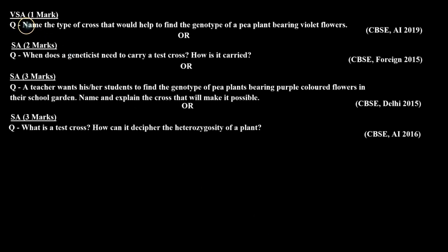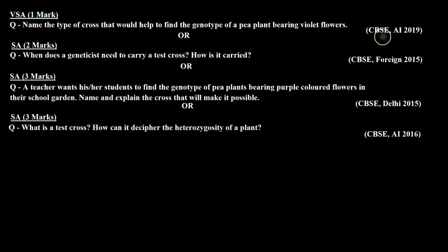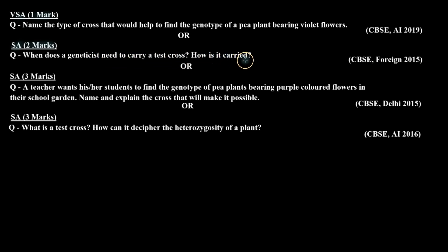The first type was asked as a very short answer type question for one mark: 'Name the type of cross that would help to find the genotype of a pea plant bearing violet flowers.' It was asked in the CBSE board All India examination 2019. The next type was a short answer type question for two marks: 'When does a geneticist need to carry a test cross and how is it carried?' — asked in CBSE board examination 2015.